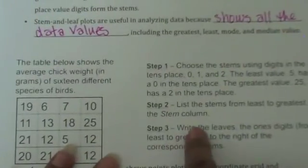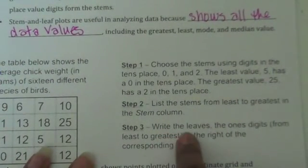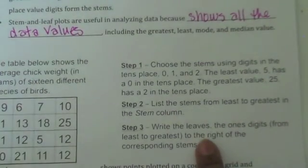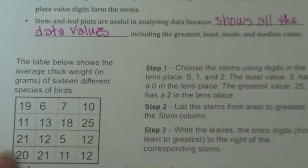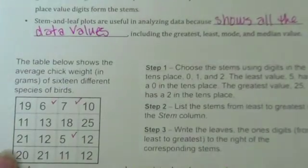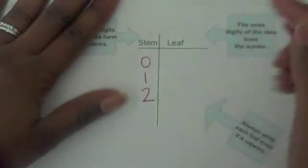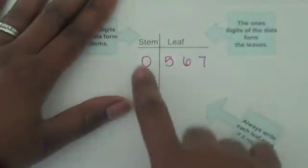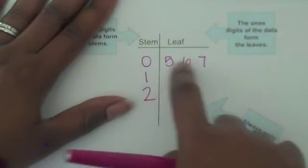Next, list the stems from least to greatest in the stem column. Then write the leaves — the ones digits — from least to greatest. Starting with stems that have 0 in the tens place: those are 5, 6, and 7. So next to our stem of 0, we put 5, 6, and 7, representing the values 05, 06, and 07.